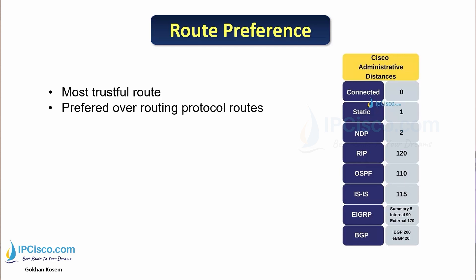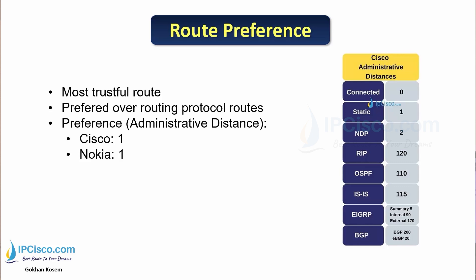Static routes are preferred over routing protocol routes because, as you can see on the screen, the routing protocol default administrative distance values are higher than static routes. Some different vendors have different administrative distance values for static routes. Cisco default is 1, Nokia default is 1, Juniper is 5, and Huawei is 60.